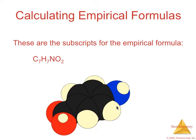And here is a model for that molecule with 7 carbons, 7 hydrogens. There's one probably hiding over here, 1 nitrogen, and 2 oxygens.